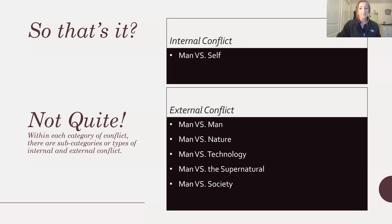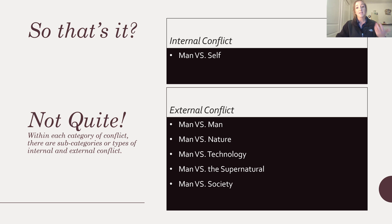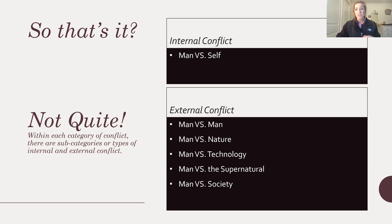When you are asked to identify what type of conflict is being shown, you not only have to classify it as internal or external conflict, but you also have to classify its subcategory. So if I present a quote to you and ask what type of conflict this is, you would have to say it is external conflict and it's man versus technology, or whatever the case is. If it's internal conflict, you say it's internal conflict and it's man versus self. You must not just say 'it's an internal conflict' — you have to say what type.